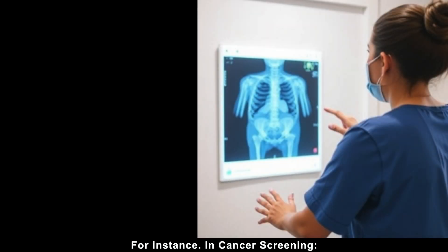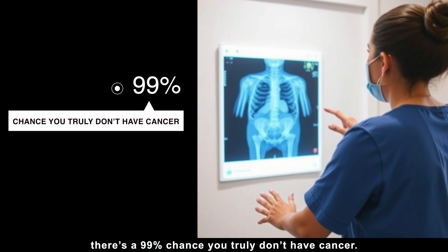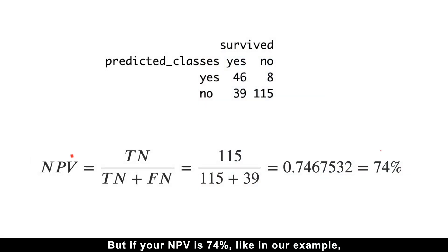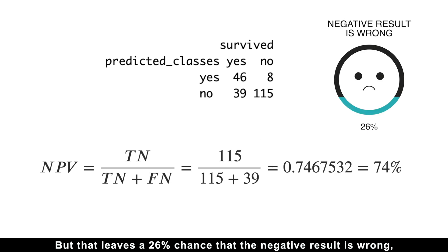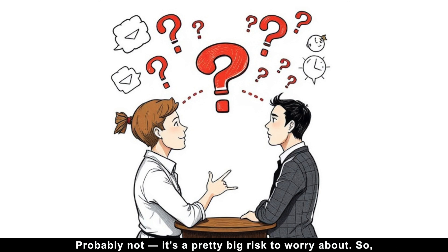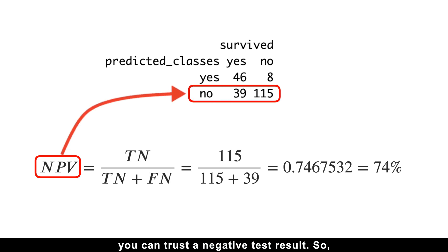Negative predictive value is crucial because it builds trust in negative results. For instance, in cancer screening, if your test comes back negative and the NPV is 99%, there is a 99% chance you truly don't have cancer. That's very reassuring. Only a 1% chance of a mistake. But if your NPV is 74%, like in our example, it means that 74% of the time, a negative result is correct. But that leaves a 26% chance that the negative result is wrong, and you might actually have cancer. Would that ease your mind? Probably not, and it's a pretty big risk to worry about. So NPV is really important because it directly affects how much you can trust a negative test result.